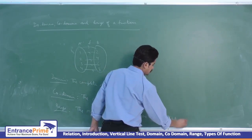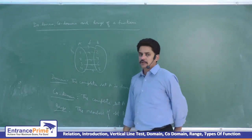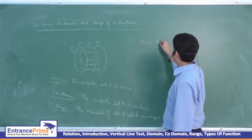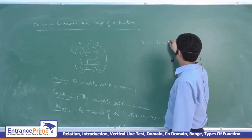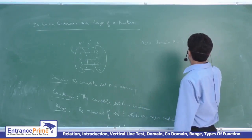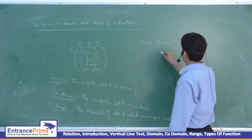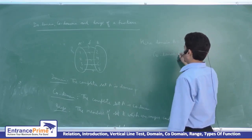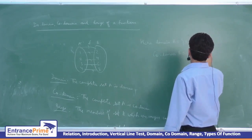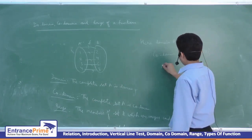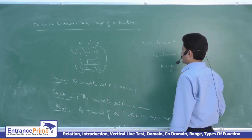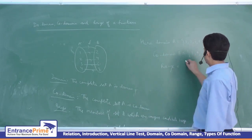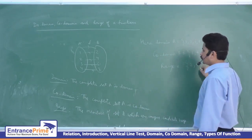So, if we try to understand with these examples — domain is set A, that is 1, 2, 3, 4. Codomain is set B, that is 2, 4, 6, 8. While here, every element of set B is the image of some element in set A, so range is also 2, 4, 6, 8.